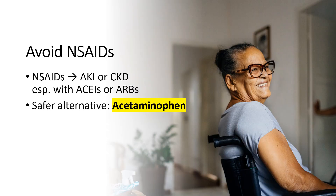Avoid scheduled use of NSAIDs like ibuprofen in older adults. Elderly patients may be on multiple medications, which can increase the risk of drug interactions and adverse effects. Adding an NSAID can lead to significant renal dysfunction, including renal failure. Acetaminophen is a safer alternative for pain control in elderly patients.